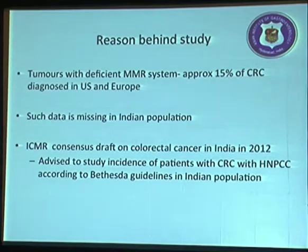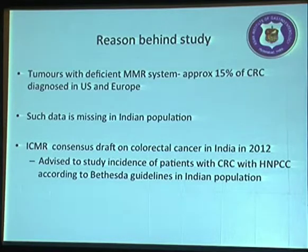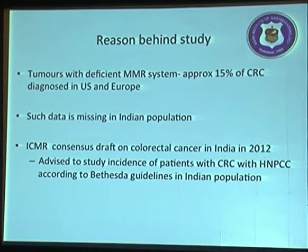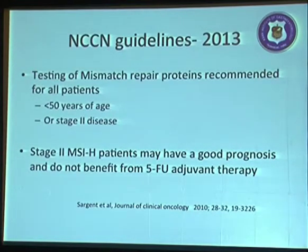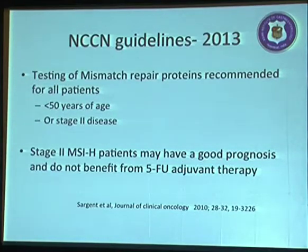The reason behind this study: tumours with deficient mismatch repair systems contribute approximately 15% of colorectal cancers diagnosed in the US and Europe, but such data was missing for the Indian population. ICMR in its consensus draft advised undertaking a study to determine the incidence of microsatellite instability in Indian population per the revised Bethesda guidelines. NCCN guidelines also recommend testing for mismatch repair genes for patients less than 50 years or with stage 2 disease, as MSI-high stage 2 patients have good prognosis but do not benefit from 5-FU adjuvant therapy.